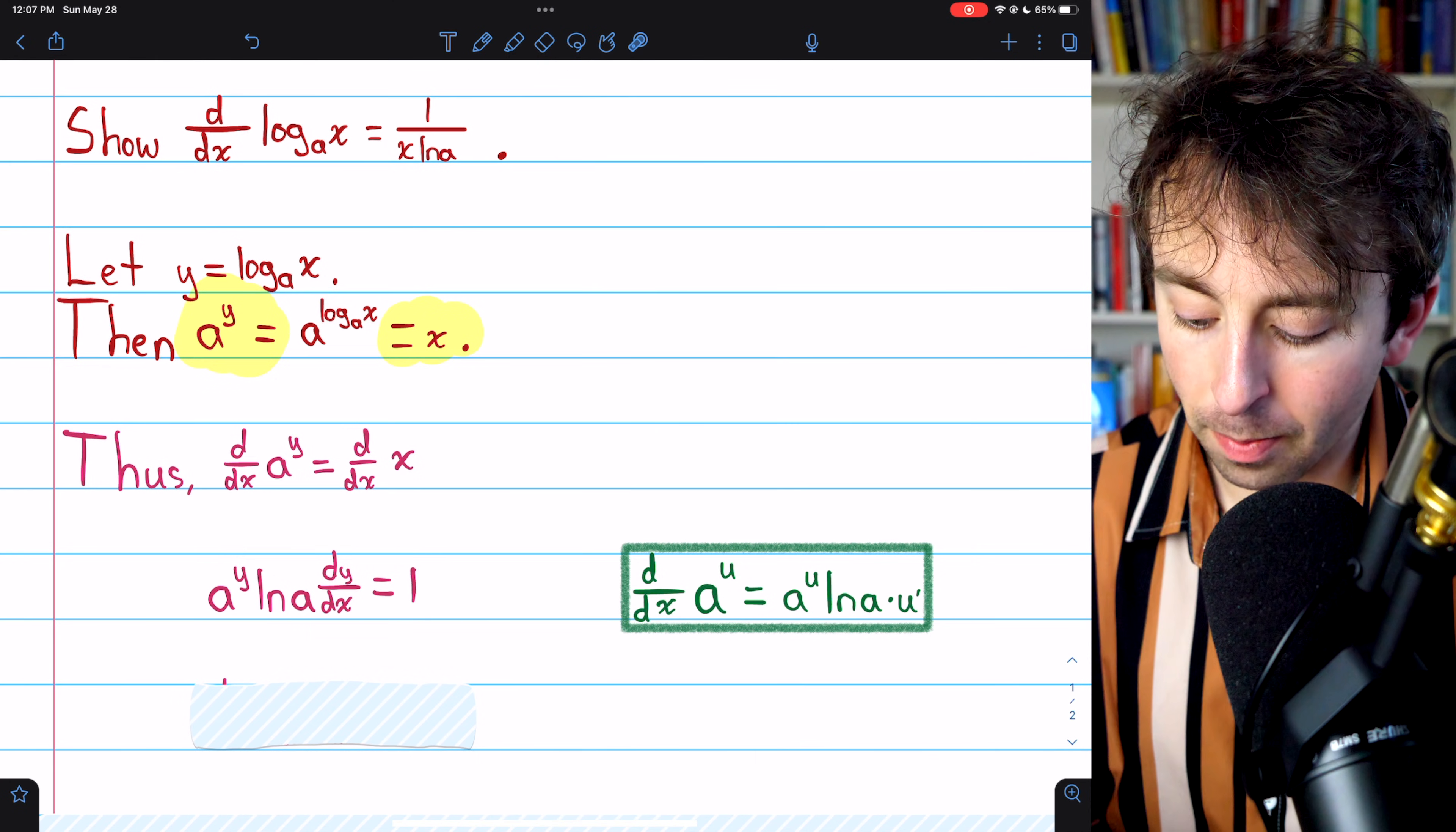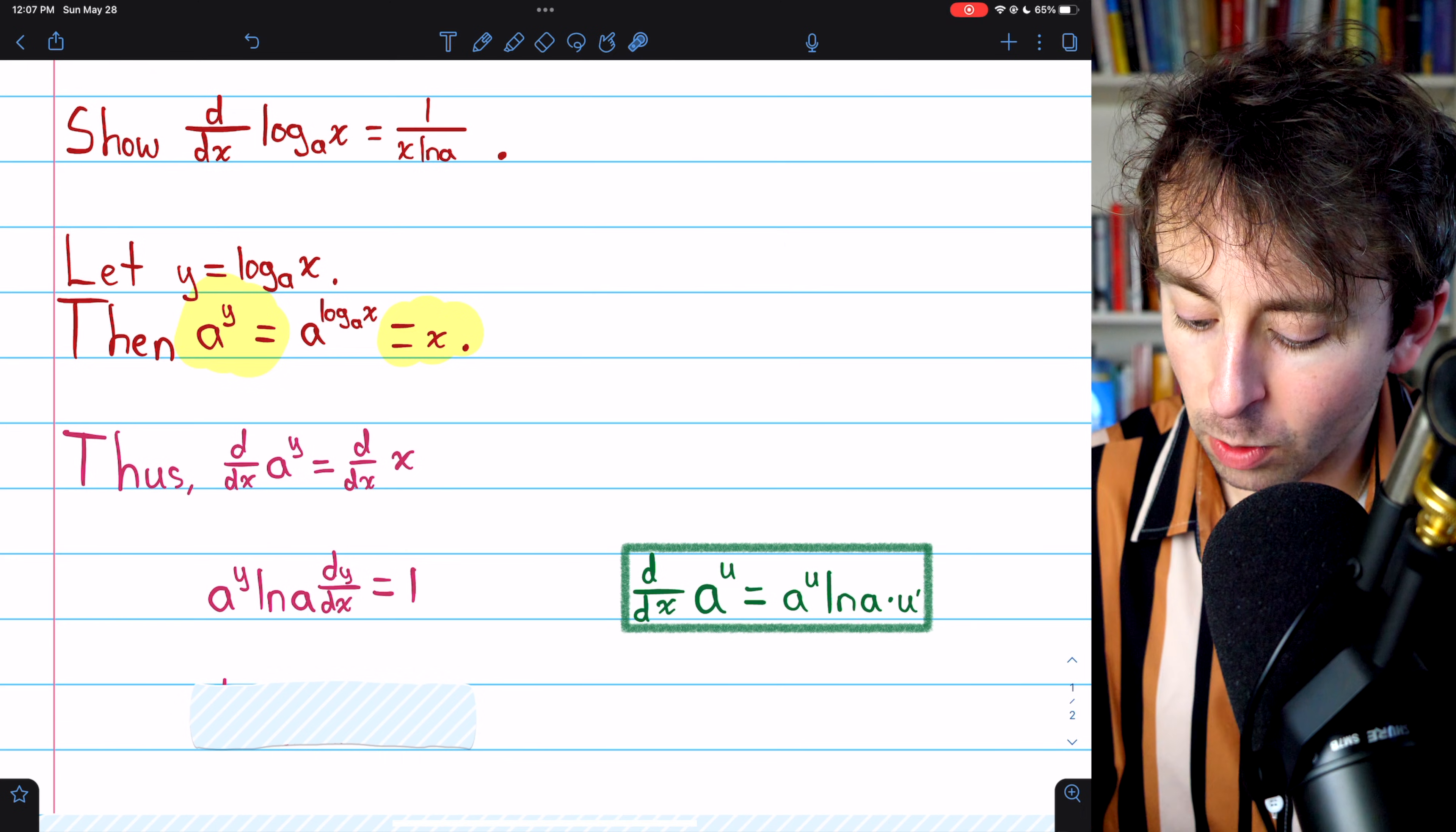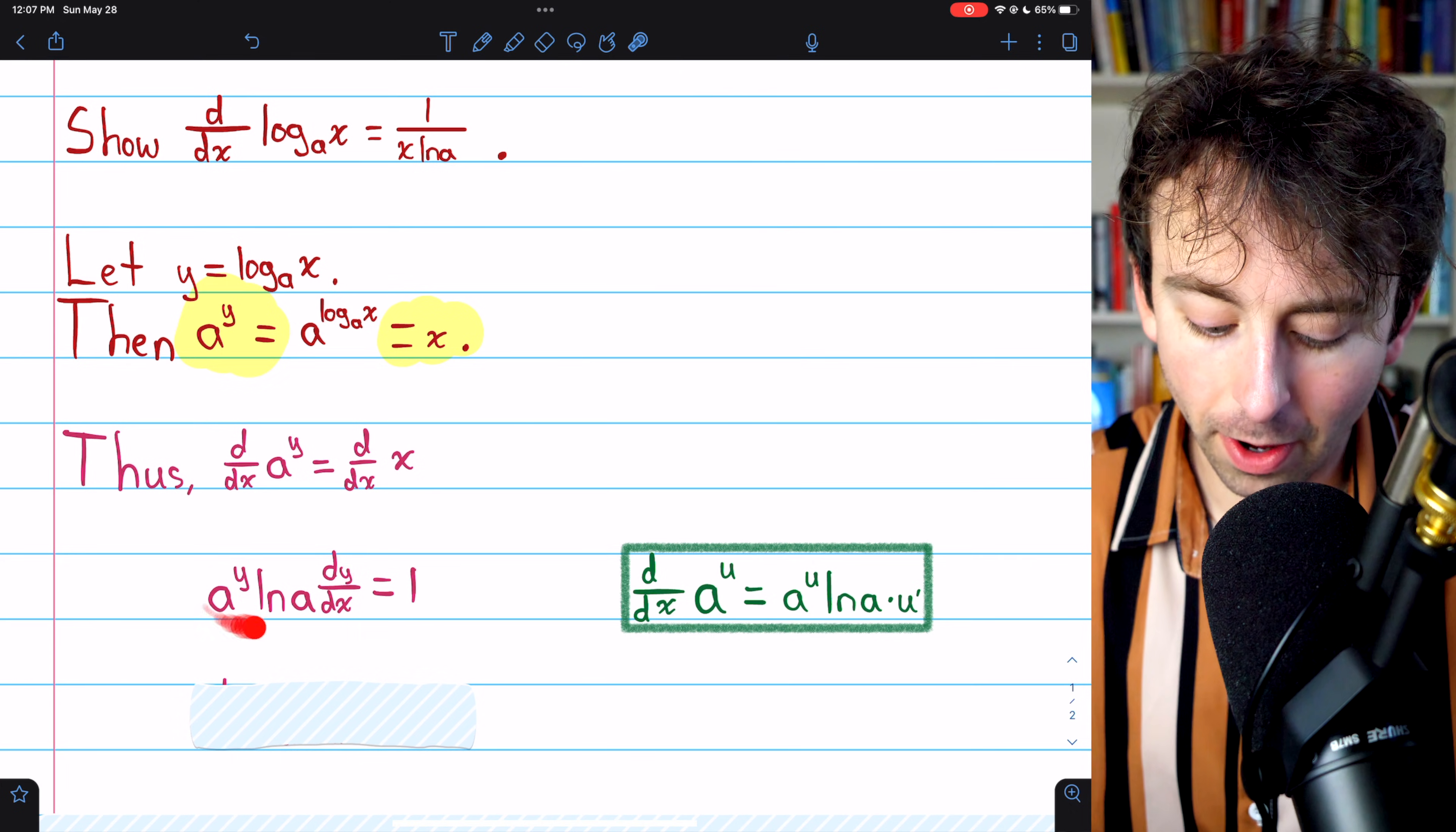The derivative of a to the power of a function, where a is just some positive number, is equal to a to the power of that function times the natural log of a, but then times the derivative of that function. It's just the chain rule. That's what we've got going on here.